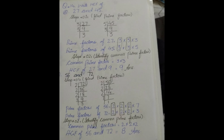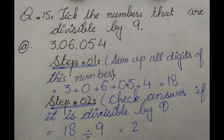Question 15: Take the numbers that are divisible by 9. Very simple. First step: we separate the digits and sum them up, like 3+0+6+0+5+4. The answer is 18. Second step: check if the answer is divisible by 9. If it's in the 9 table, then the original number is divisible by 9.